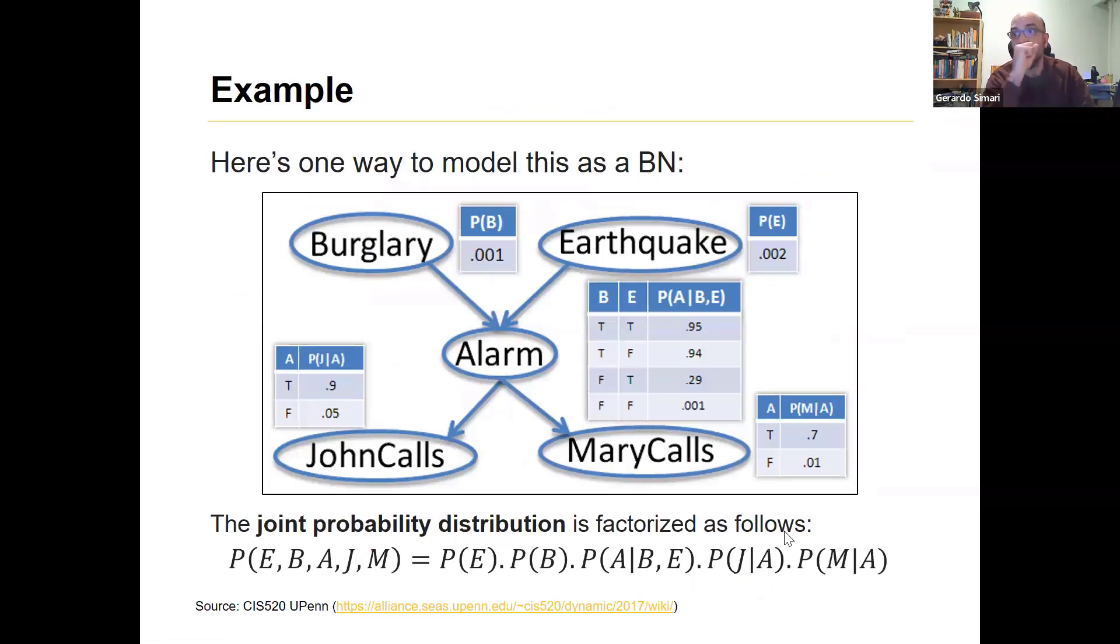And one way to model this is with this Bayesian network. So we have, we'll see that nodes that don't have any parents are called prior, they have prior probabilities. So what's the probability that your house will be the victim of a burglary? Suppose we're in a pretty safe neighborhood, it's one in 1,000. And because we're in California, it's twice as likely that there will be an earthquake, so it's two in 1,000.